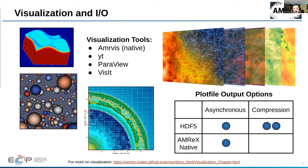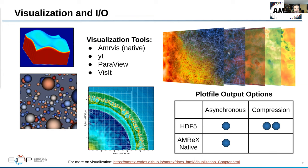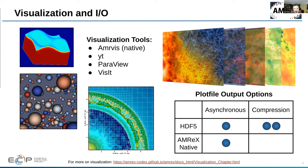AMReX optionally integrates with HDF5 for output. Both AMReX's native format and HDF5 output support asynchronous writes, but HDF5 additionally provides SZ and ZFP compression.